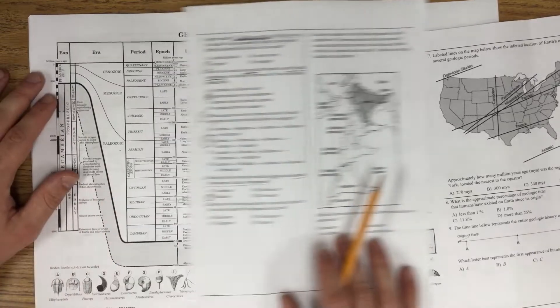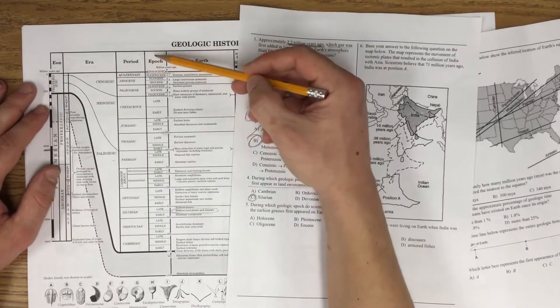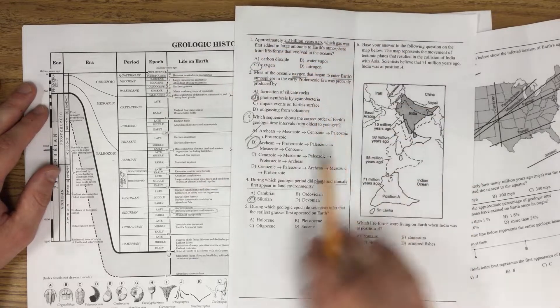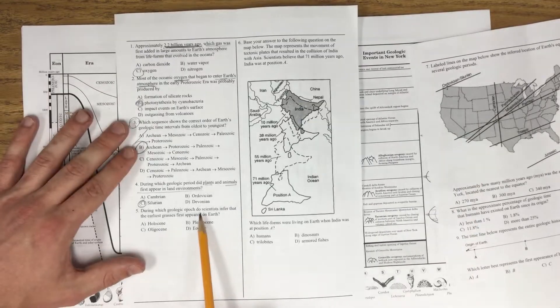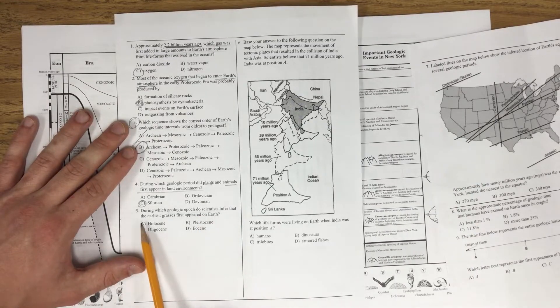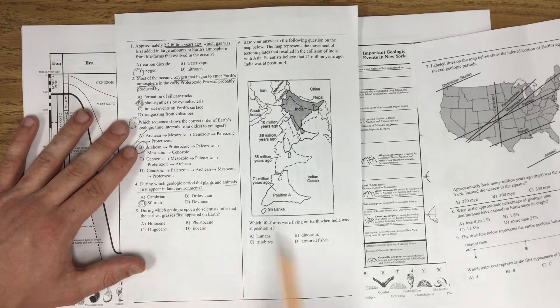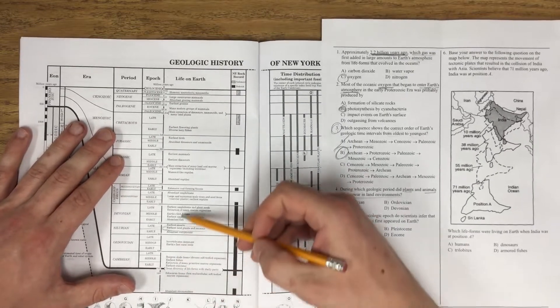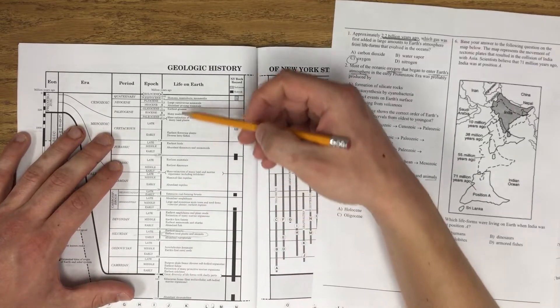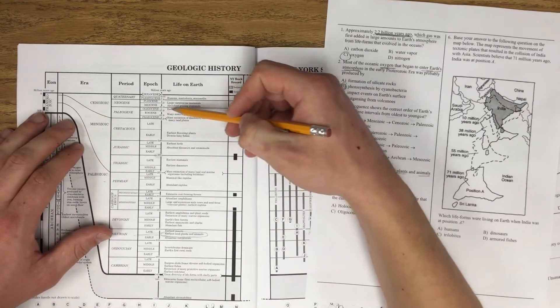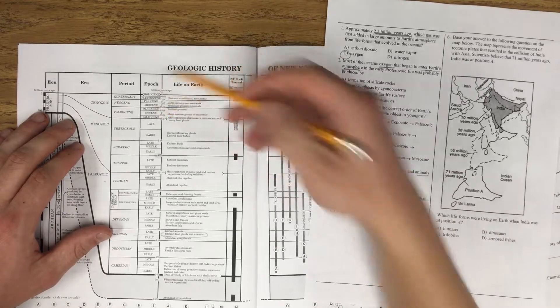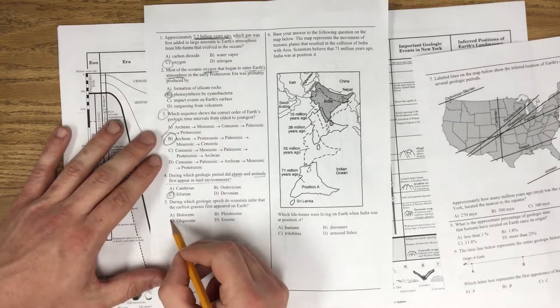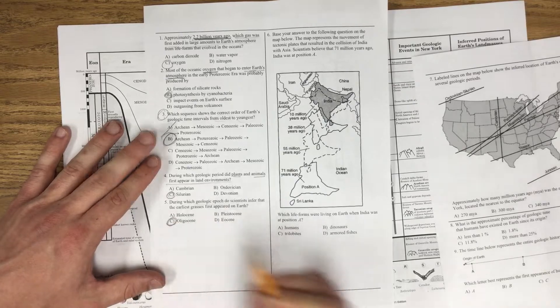Let's try another one. During which geologic epoch? Oh look, right next to period is epoch. So the answer is going to be here. During which geologic epoch do scientists infer the earliest grasses first appeared on Earth? So I just look through for earliest grasses. Earliest grasses. Right there. That's going to be read over. Epoch Oligocene. Is that an option? The Oligocene. Good work.